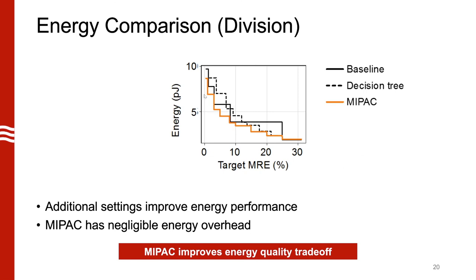We also looked at the energy comparison. Because MyPack supports additional quality settings, it provides finer-grained quality-energy control. For many target quality levels, from an application's perspective, we can actually provide lower energy consumption than the original circuit. MyPack has very negligible energy overhead: looking at where it saturates, the overhead is almost zero. Even in cases where MyPack is just using the default circuit, the overhead is very little cost to the application. MyPack significantly improves the energy-quality tradeoff compared to the baselines.